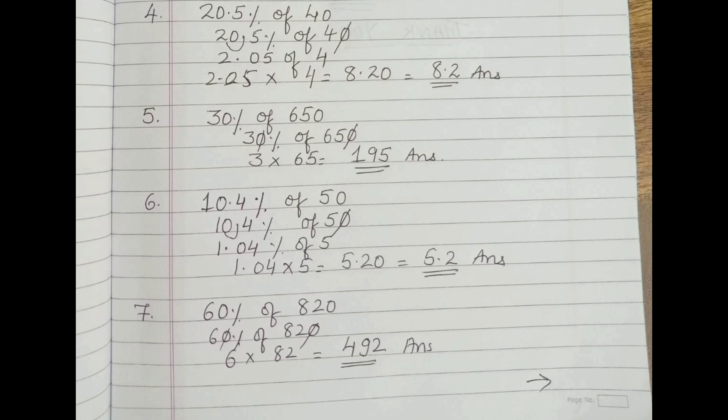The fifth one: 30 percentage of 650. Same method - cut zeros from both sides. You get 3 multiply 65, which equals 195.